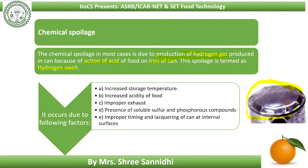Hydrogen swell occurs due to the following factors: increased storage temperature driving acids to react with the metals; increased acidity in food; improper exhaust of unwanted gases from the can; presence of soluble sulfur and phosphorus compounds; and improper tinning and lacquering of can internal surfaces.